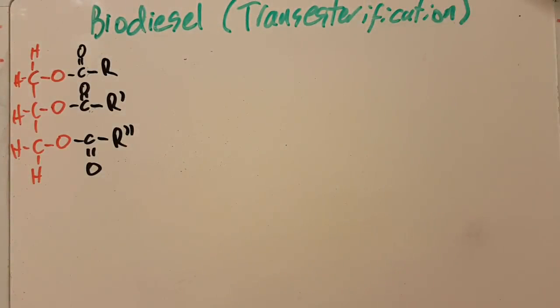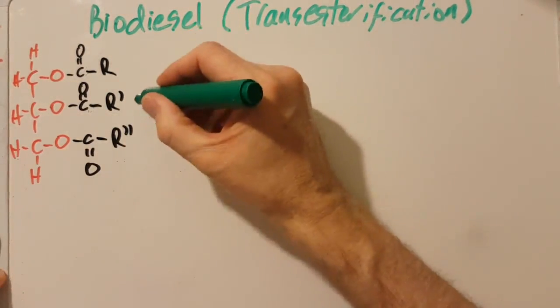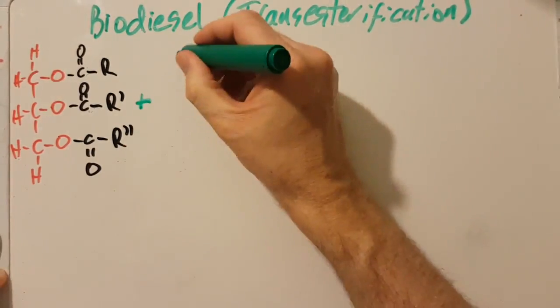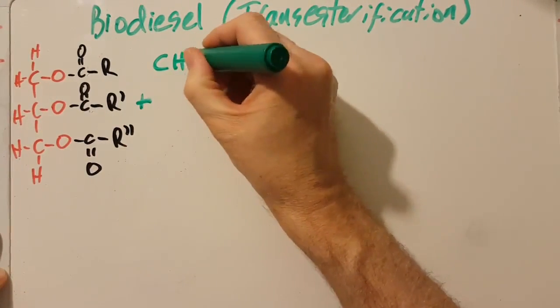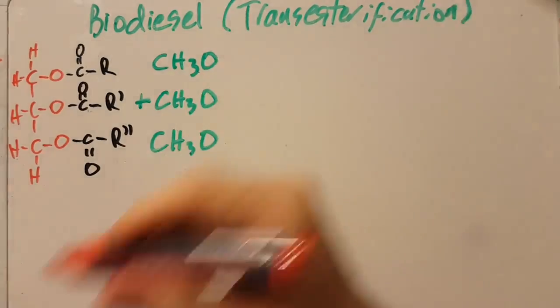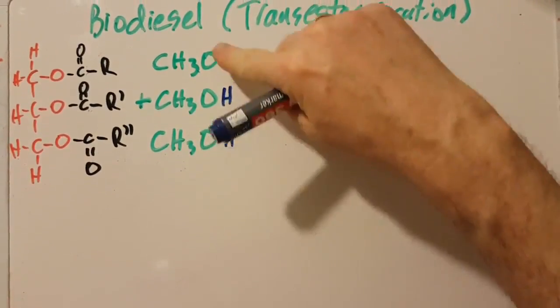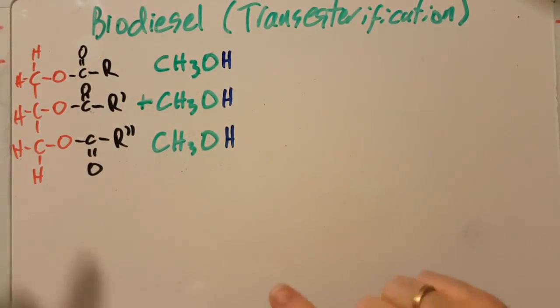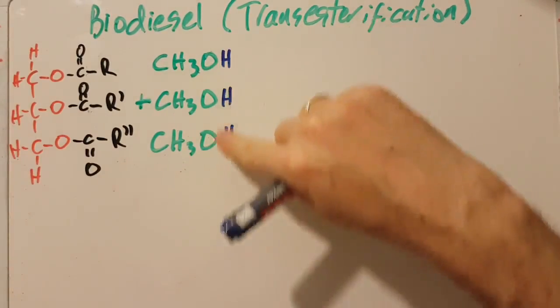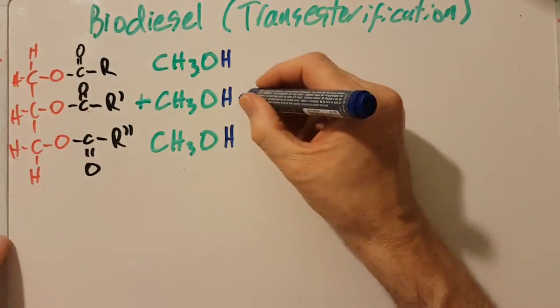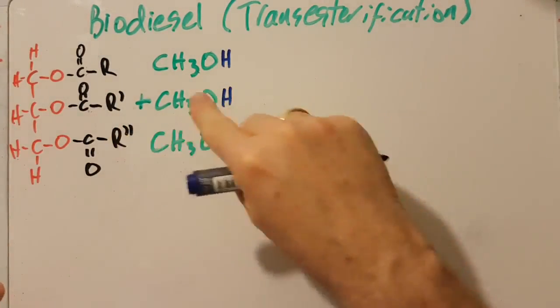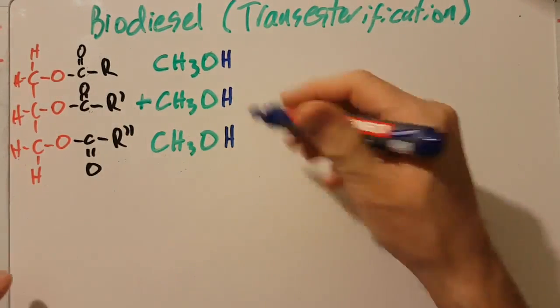Now you're reacting this with methanol, or it could be ethanol. I'm going to choose methanol. Now methanol in itself is a good fuel, but vegetable oil is probably cheaper and easier to get than methanol, I would imagine. So if you react the two together, you can make a better fuel.